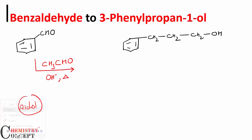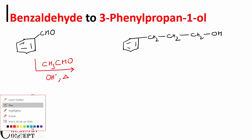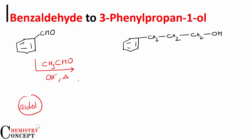What will happen? We'll get a product like this: benzene with CH double bond CH CHO — that is, an alpha,beta-unsaturated aldehyde (cinnamaldehyde-type structure).